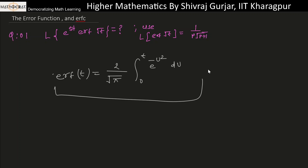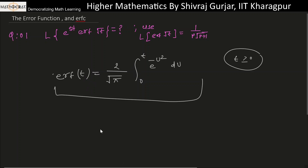Here t is of course greater than or equal to zero. When t becomes zero, the error function erf(0) is zero because the upper and lower limits become the same. Now let's see what happens when the limit t tends to infinity — what does the error function become?